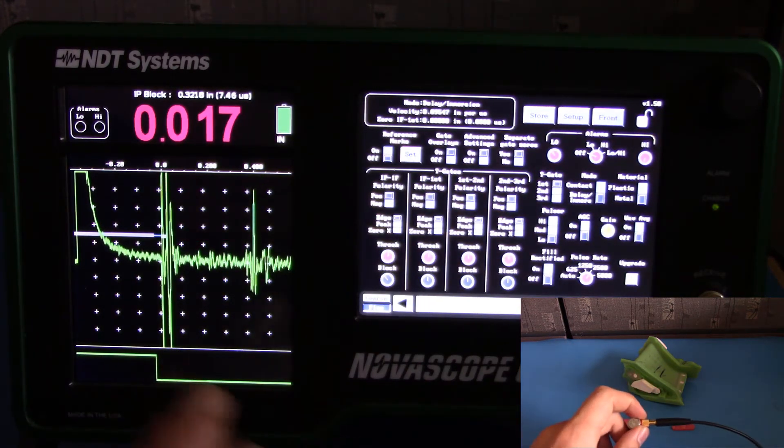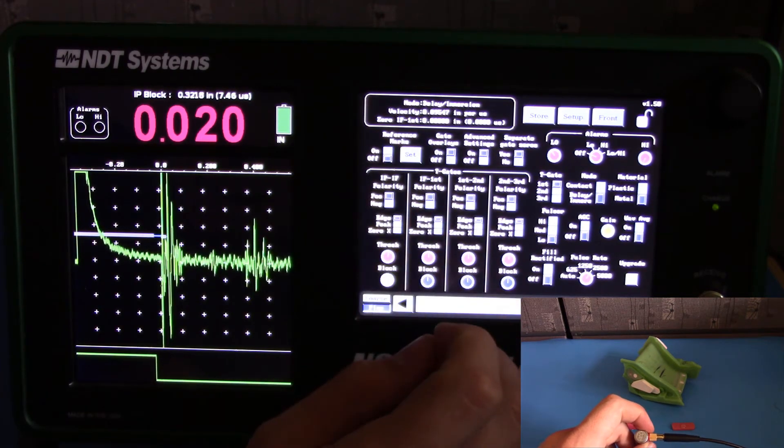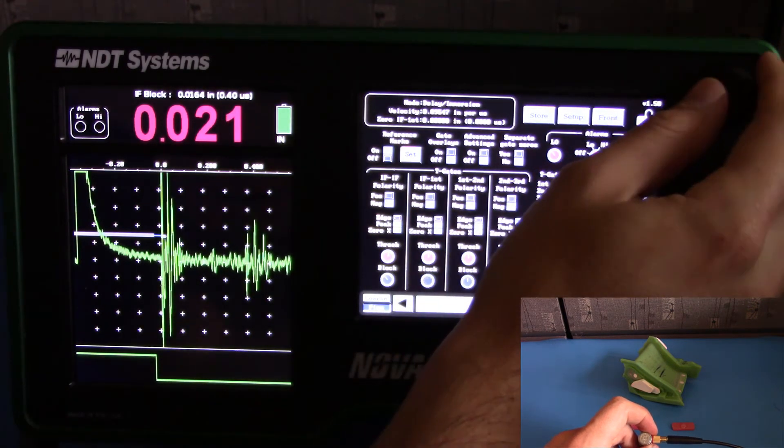Next, uncouple the probe and see where the noise falls. We'll need to go to our IF first block and block out that noise.